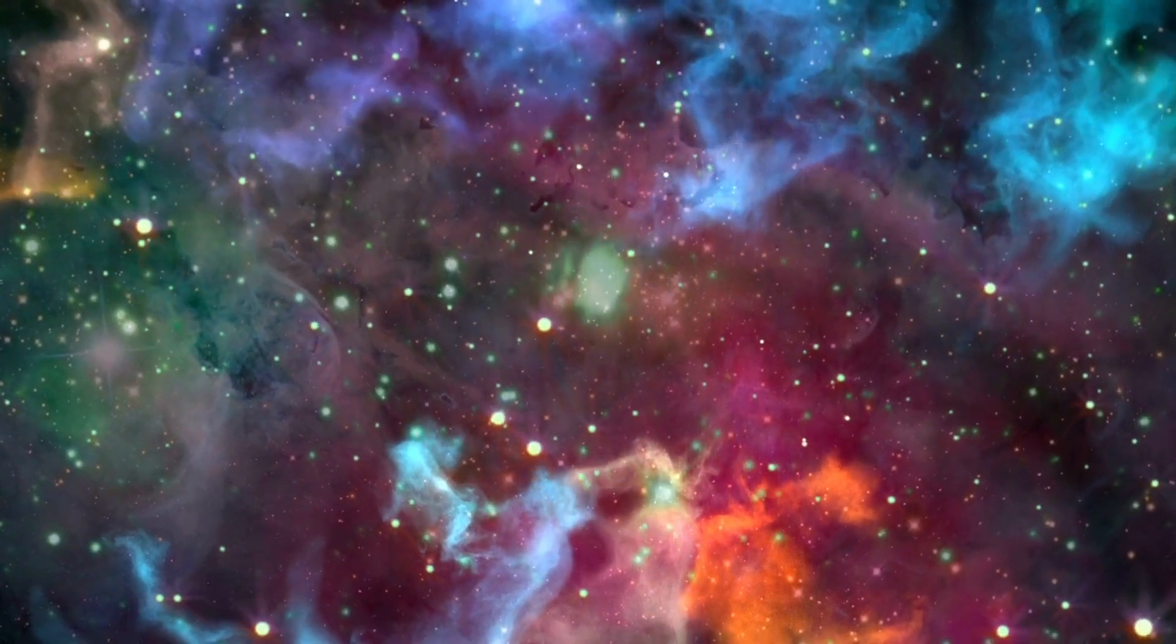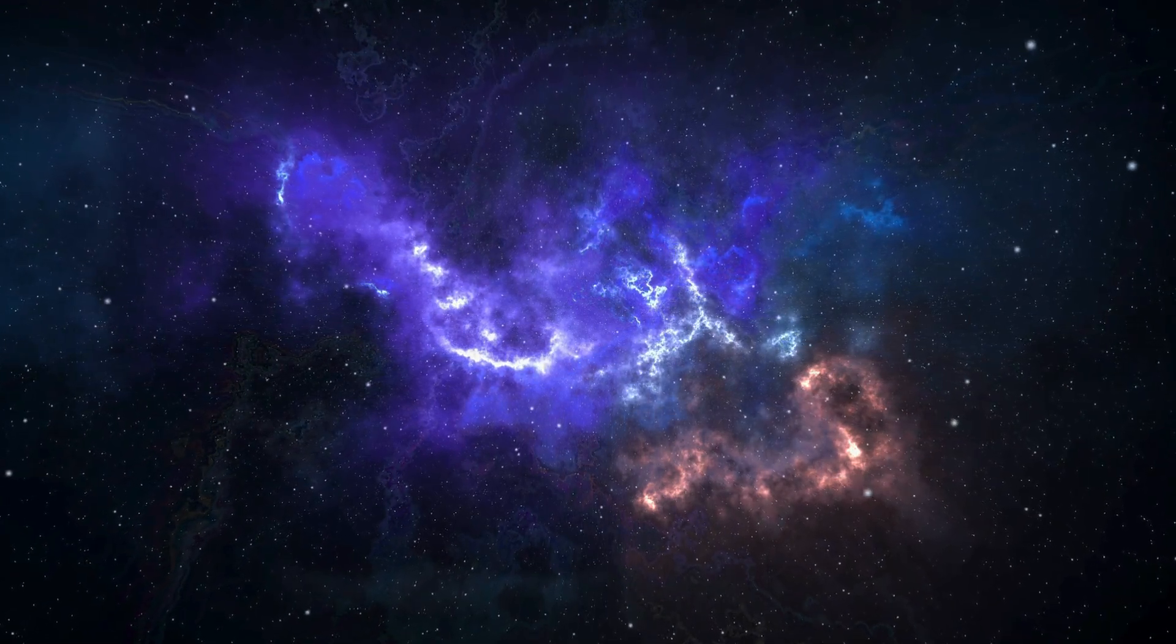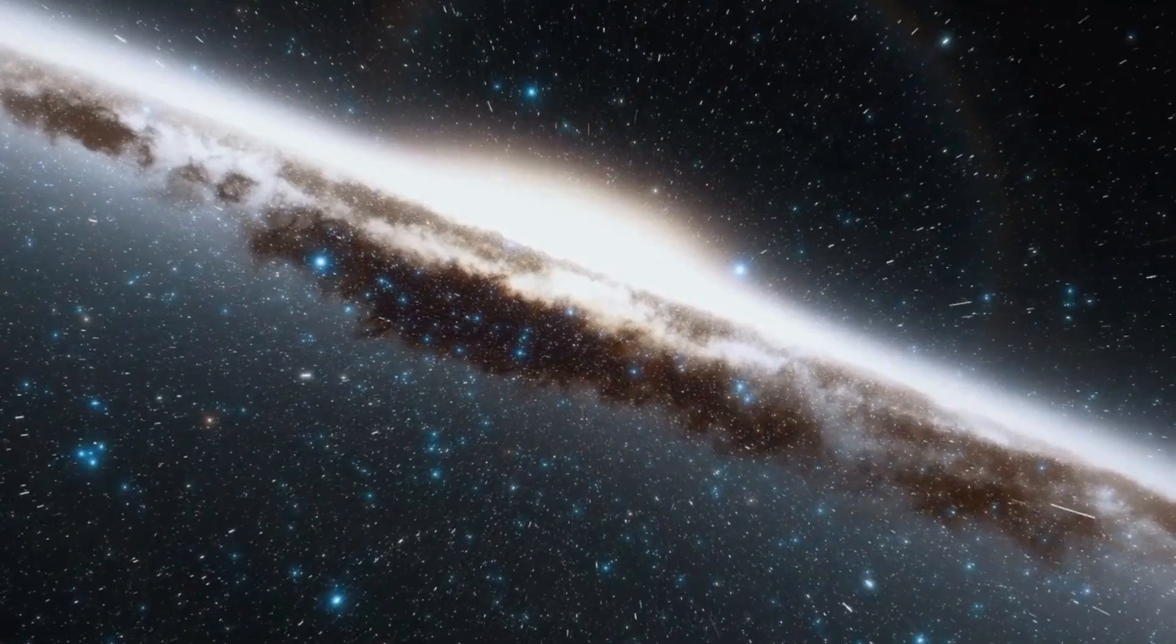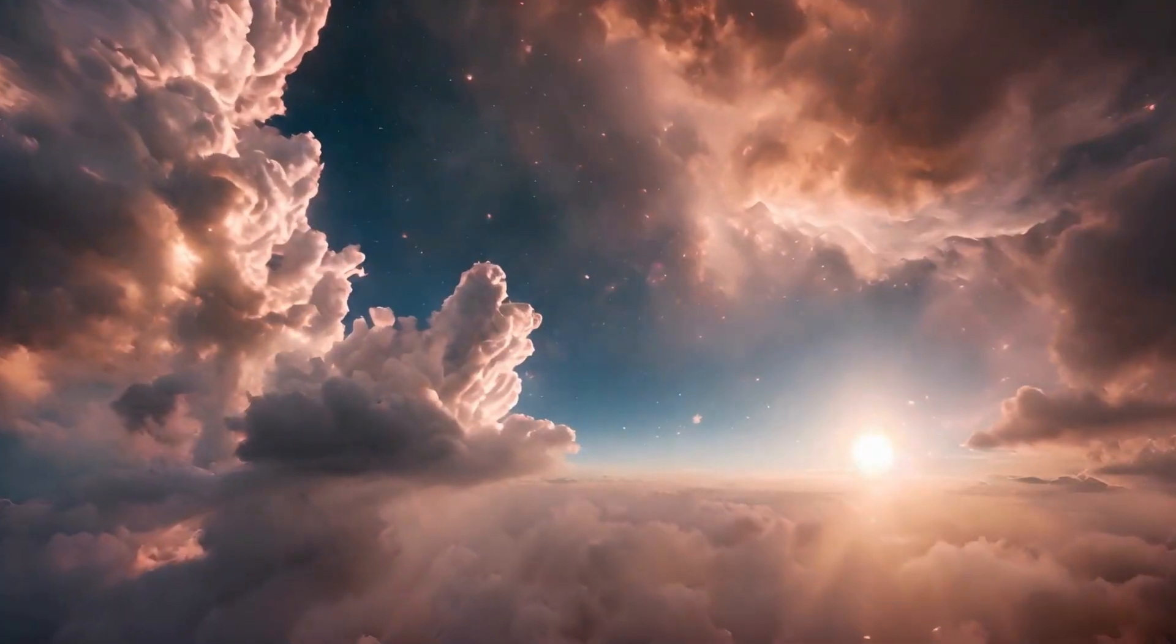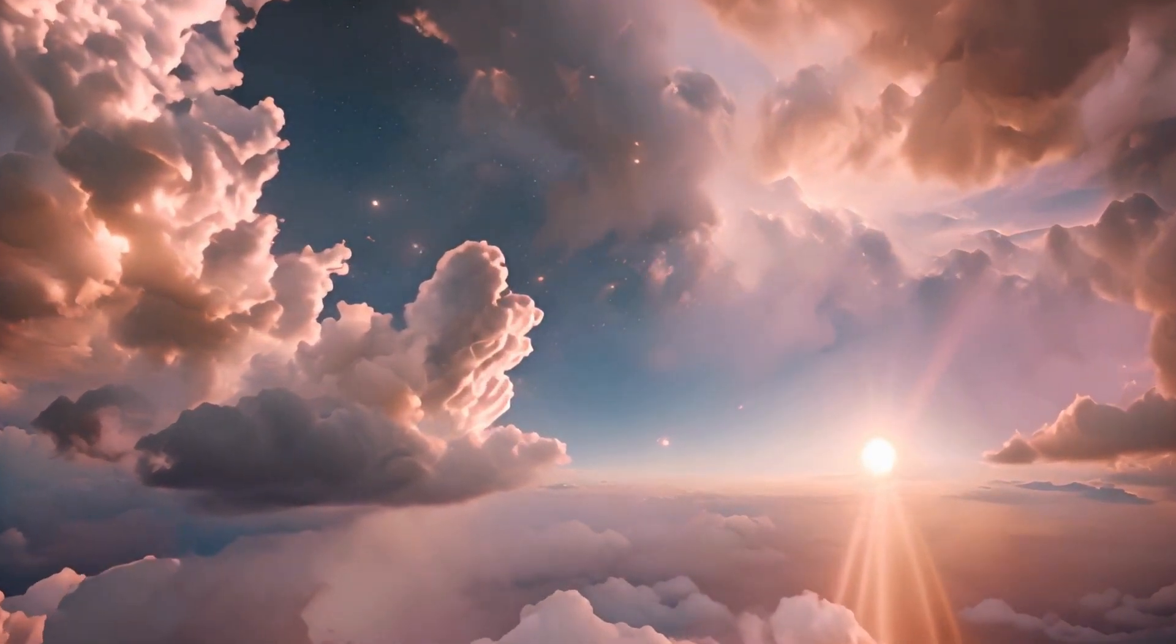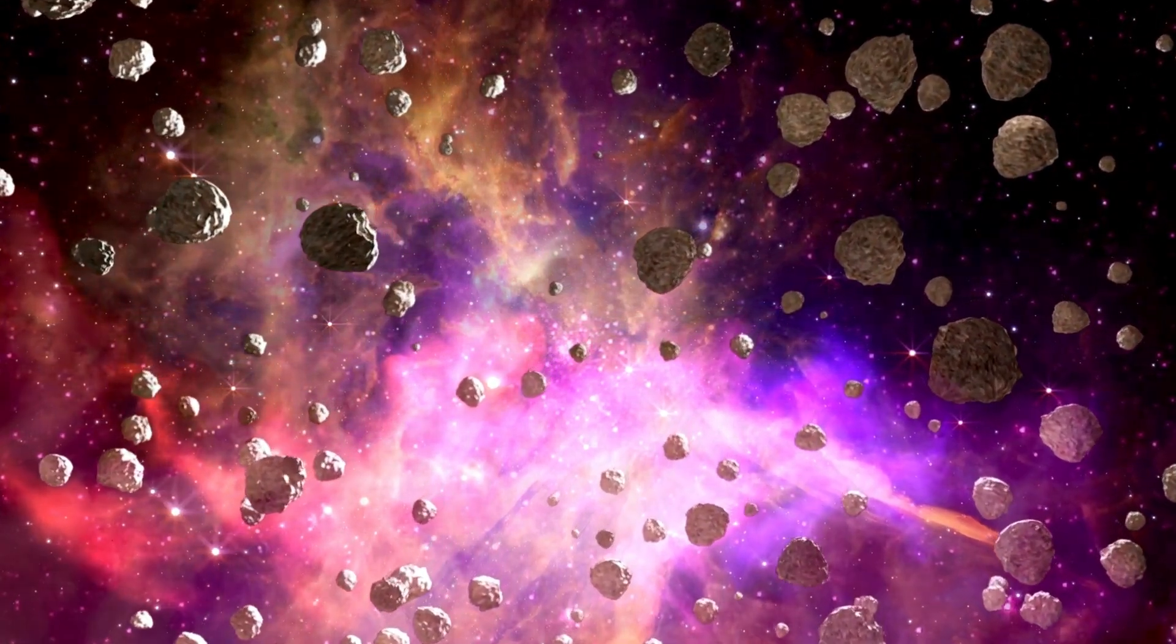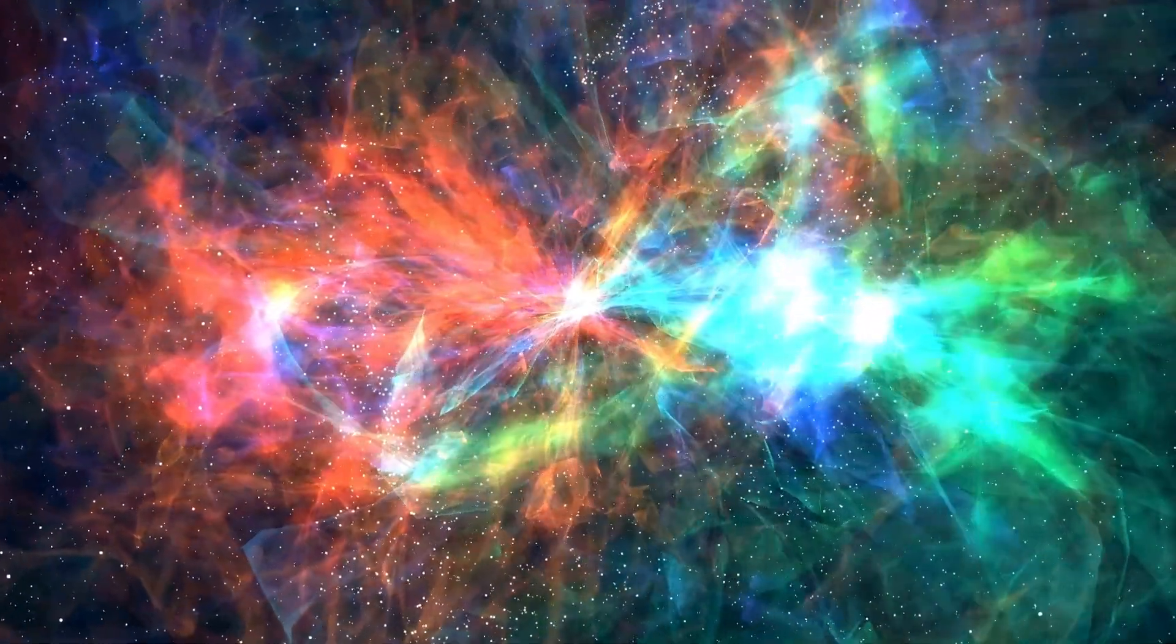While the visible light emitted by a supernova is indeed stunning, it is only a fraction of the total energy produced during such an event. Although high levels of visible light can cause temporary visual impairment, the greater concern lies in the high-energy radiation emitted alongside the visible light. This radiation often manifests as X-rays and gamma rays, which can have far-reaching consequences. One of the most significant dangers posed by this high-energy radiation is its ability to catalyze the depletion of the ozone layer that protects our planet from harmful solar radiation. Without a robust ozone layer, life on Earth's surface would be exposed to extreme ultraviolet radiation from the sun, potentially leading to mass extinction events.